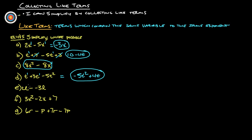2l minus 3l. That's l to the first, l to the first, so those are the same. The double negative turns into a positive: 2l plus 3l is 5l.